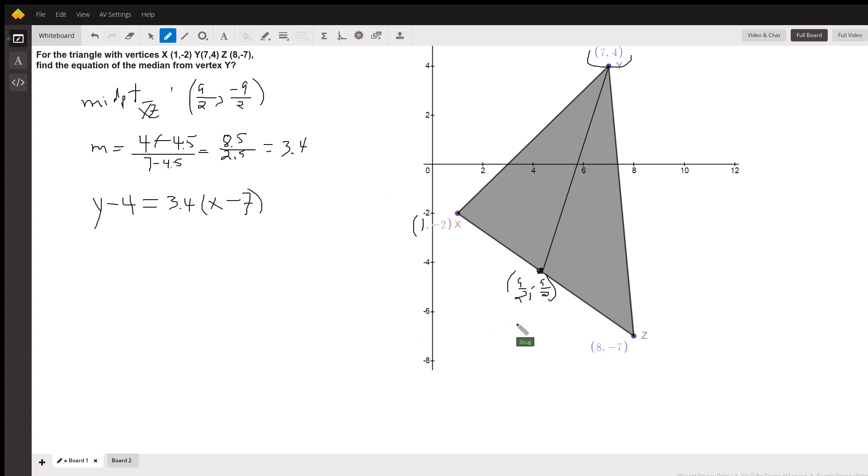And of course that line would go forever in both directions. We could write this as y minus 4 equals, what, 3 and 2 fifths, or 17 fifths.